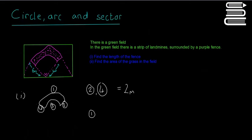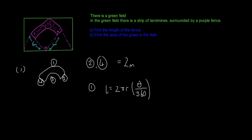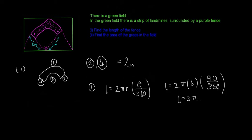For side 1, we have an arc. The formula for arc length is L = 2πr × θ/360°. For side 1, which is the bigger arc, the radius is 6 metres and theta is 90 degrees since there's a right angle. So L = 2π × 6 × 90/360, which gives us L = 3π metres.